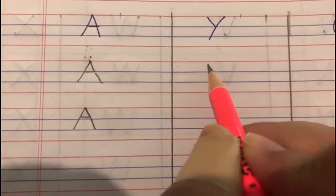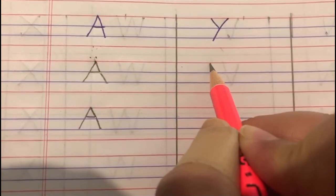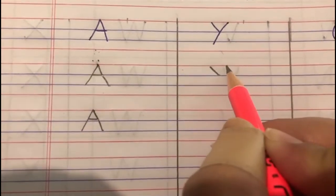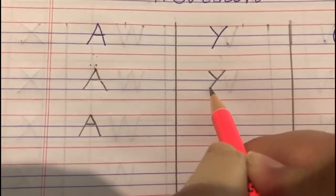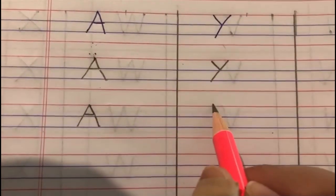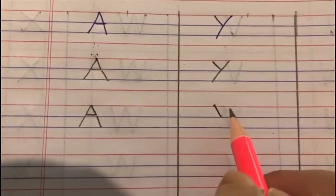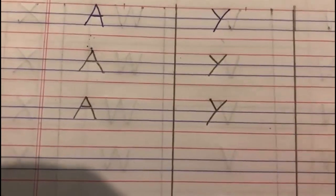Now, come on, let's write Y. So, when we write Y, we start from the red line to the first blue line. Again, red line to the second blue line. Y. Red line to first blue line. Red line to second blue line. Y. Y says Y.